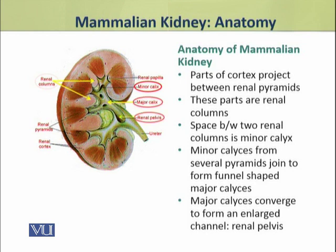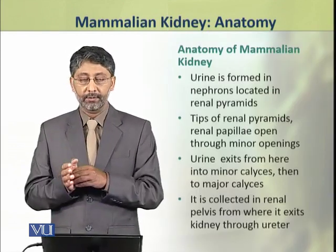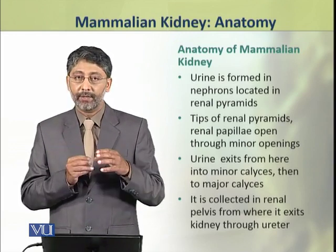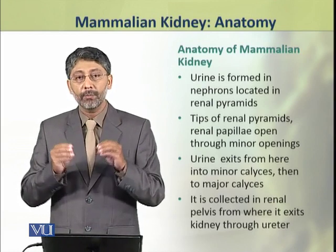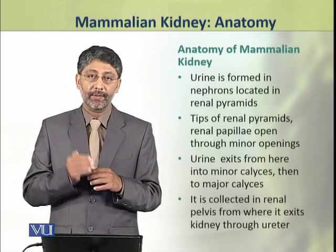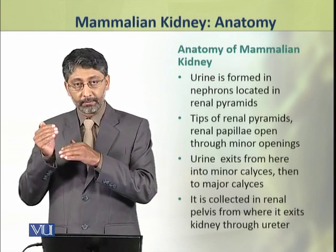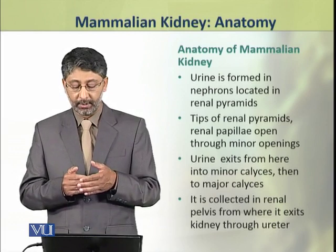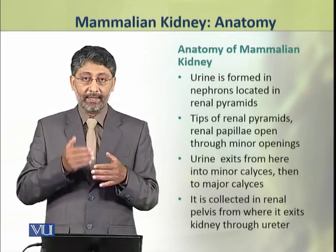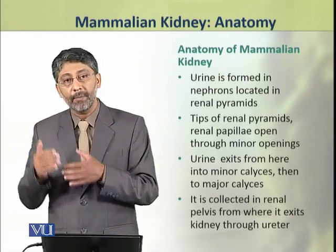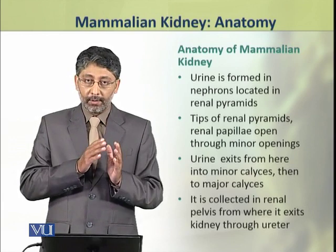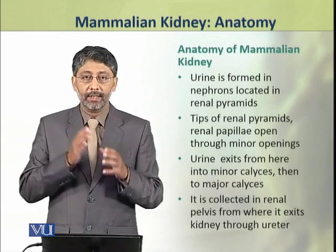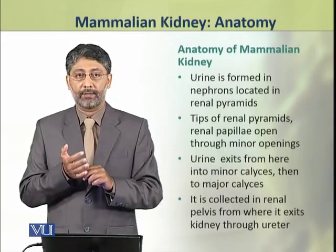Urine is formed in the nephrons located in the renal pyramids. The tips of the renal pyramids, that is the renal papillae, open through minor openings through which urine exits from the nephrons and their collecting ducts into the minor calyces, then into the major calyces, and is collected in the renal pelvis, from where it exits the kidney through a ureter.